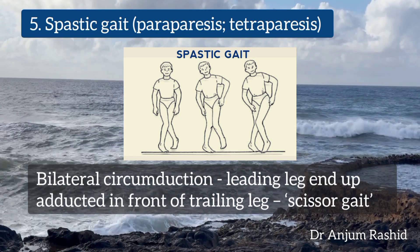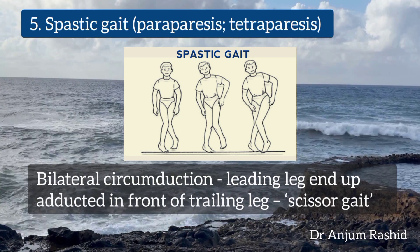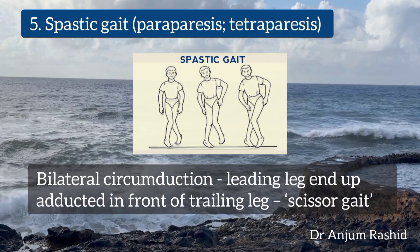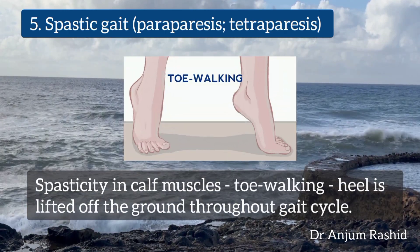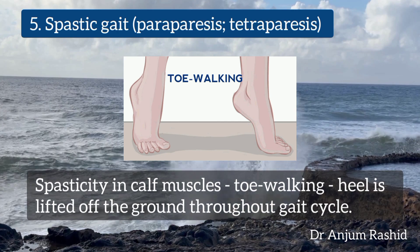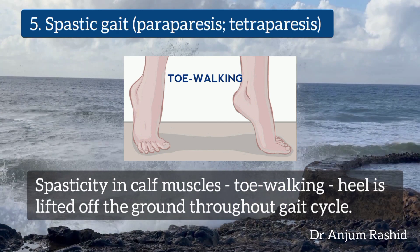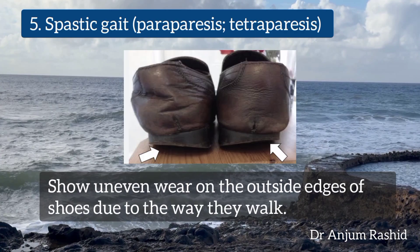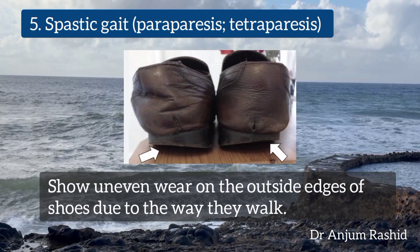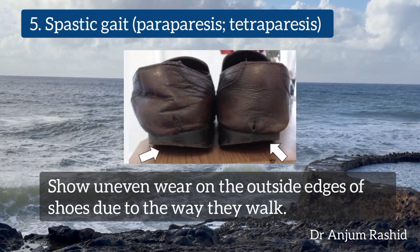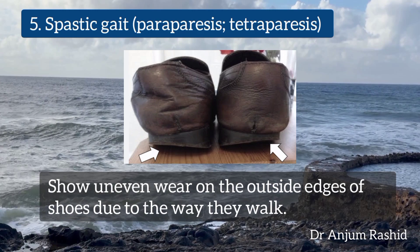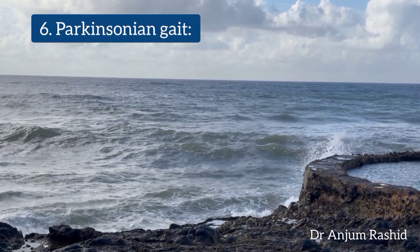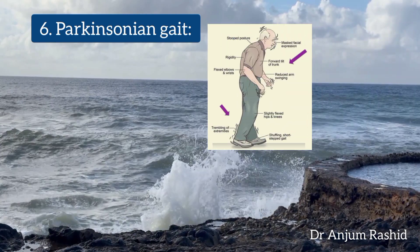In spastic gait there is bilateral spastic leg involvement and bilateral circumduction, such that the leading leg may end up adducted in front of the trailing leg — producing a scissor gait. Spasticity in the calf muscles can lead to toe walking, where the heel is lifted off the ground throughout the gait cycle. People with spastic gait may also show uneven wear on the outside edges of their shoes due to the way they walk.